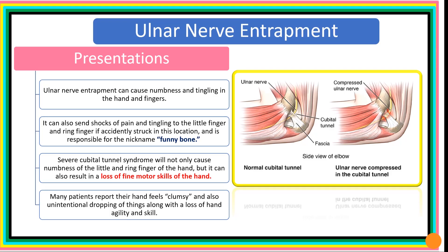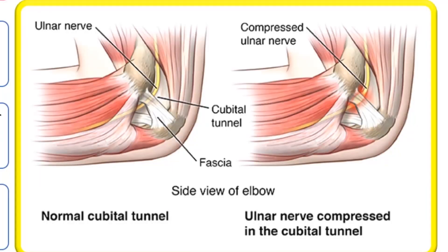Ulnar nerve entrapment in the cubital tunnel can cause numbness and tingling in the hands and fingers. It can also send shocks of pain and tingling to the little finger and ring finger if accidentally struck in this location — responsible for the nickname 'funny bone.' Severe cubital tunnel syndrome can cause numbness of the little and ring fingers and loss of fine motor skills. Some patients also report their hands feeling clumsy, dropping things unintentionally, and loss of agility and skills. Thank you.